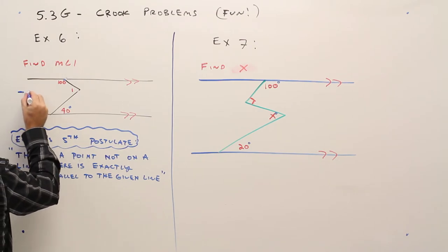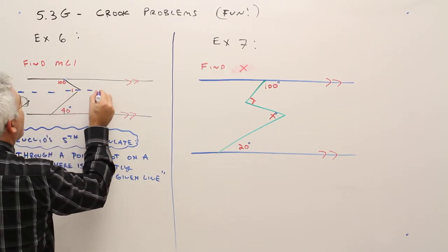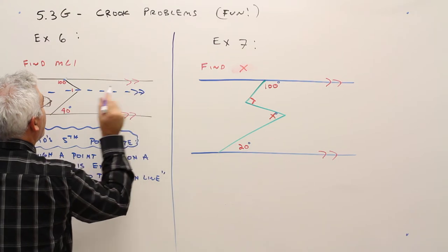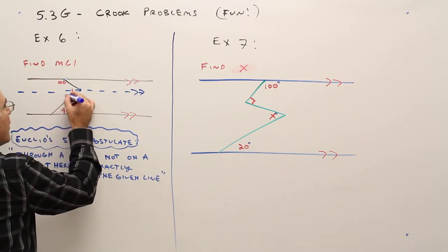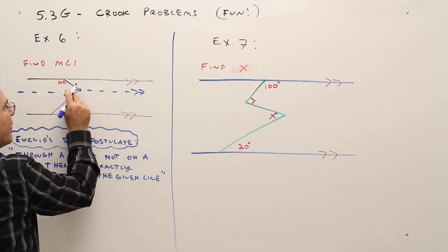Okay, so I'm going to start by drawing a parallel line right through that vertex. Okay, once I do that, oh, if you're 40 degrees, you're going to be 40 degrees there, that little chunk.